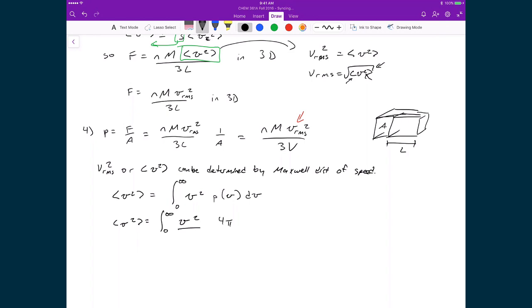That's 4 pi capital M over 2 pi RT to the power of 3 halves. I have another v squared times the exponent of negative Mv squared over 2RT dv.